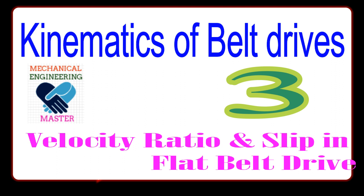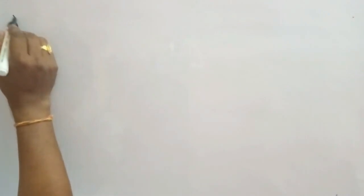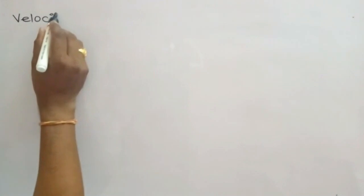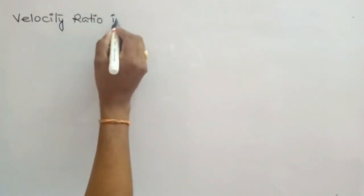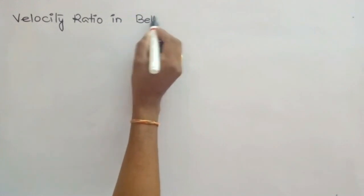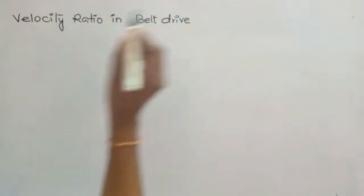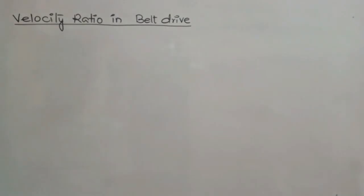Good morning friends. In the previous session we already discussed different types of flat belt drives. The continuation of this is the determination of velocity ratio in the belt drive. So, velocity ratio in belt drive: as we already discussed, power is transmitted from the driving member to the driven member.